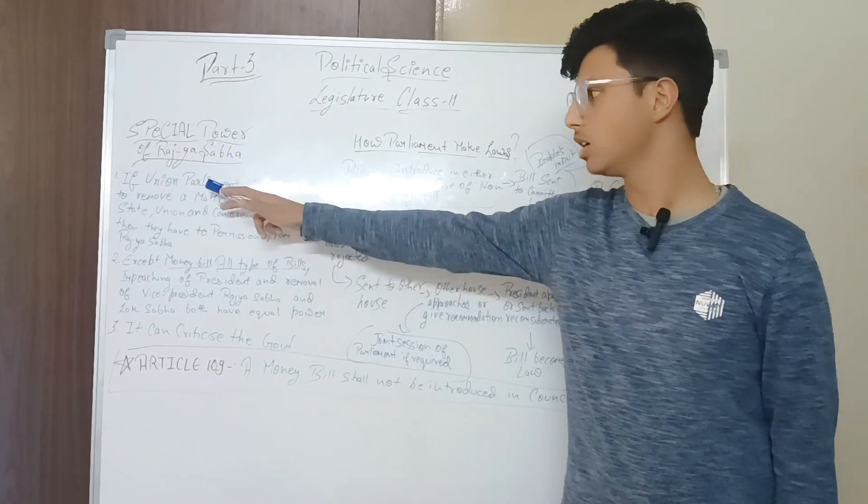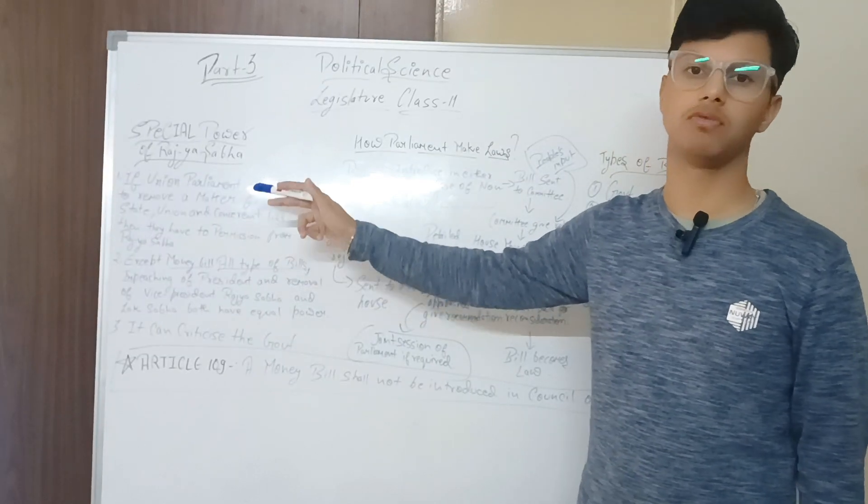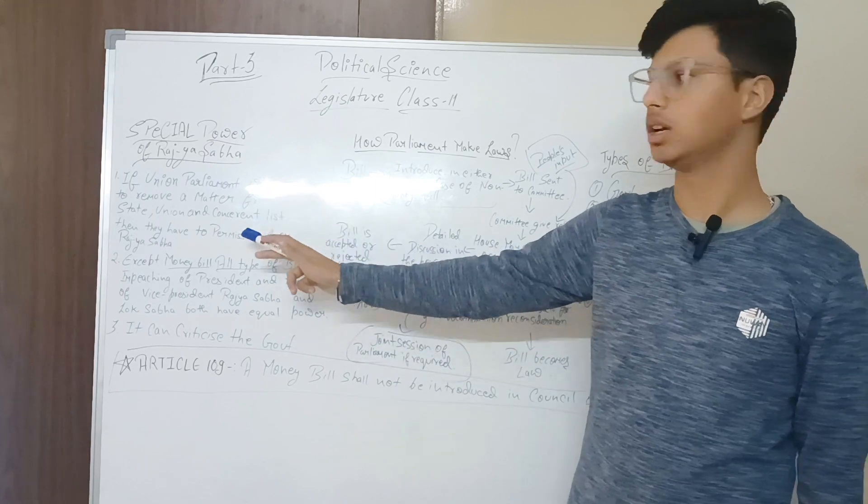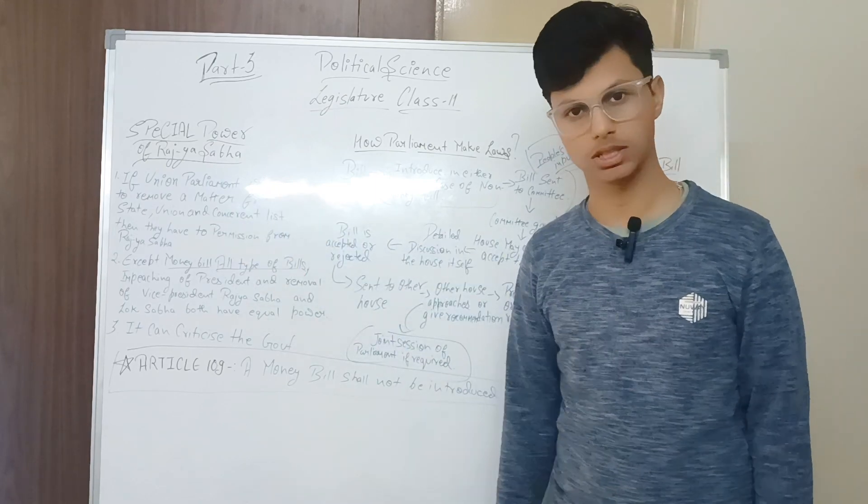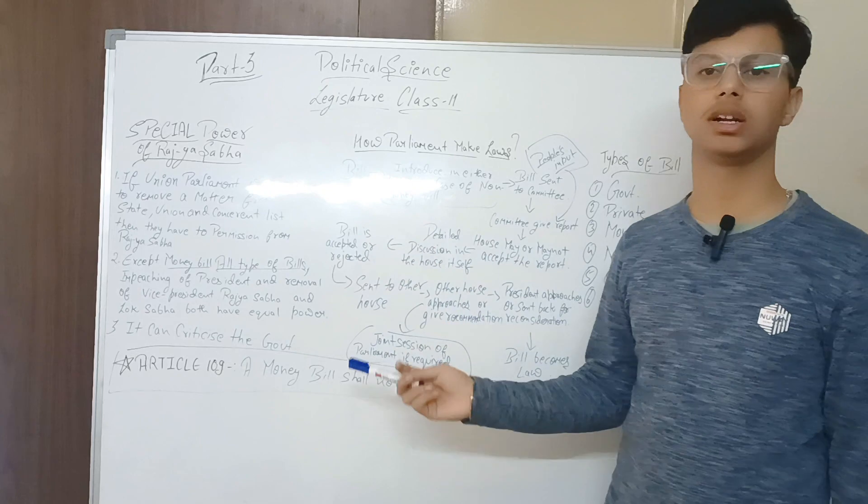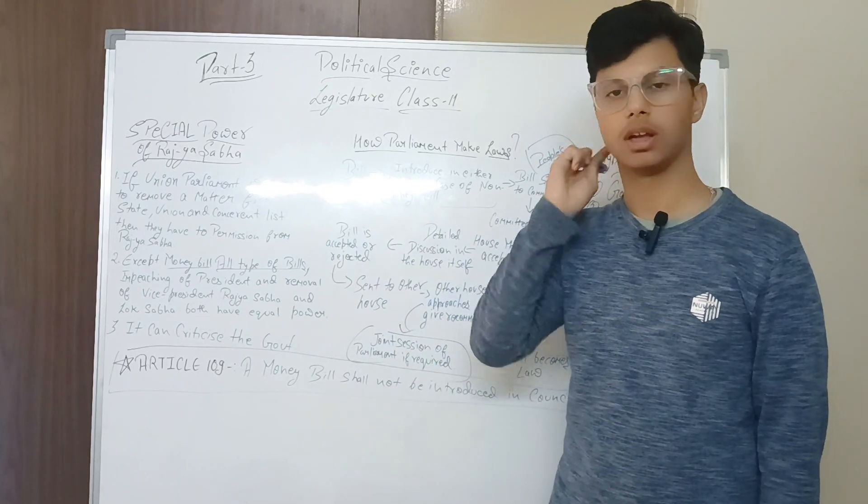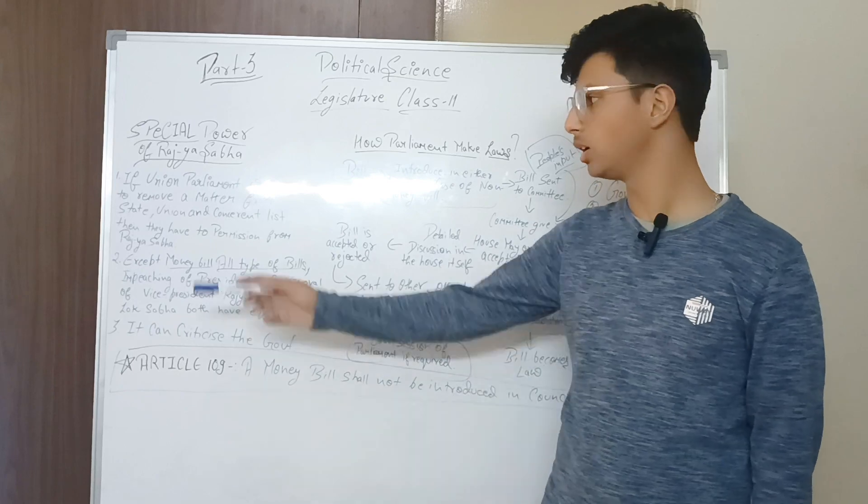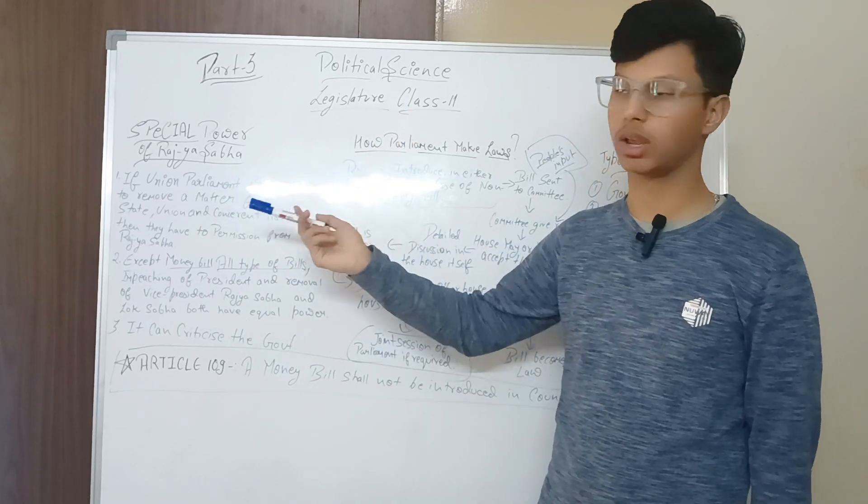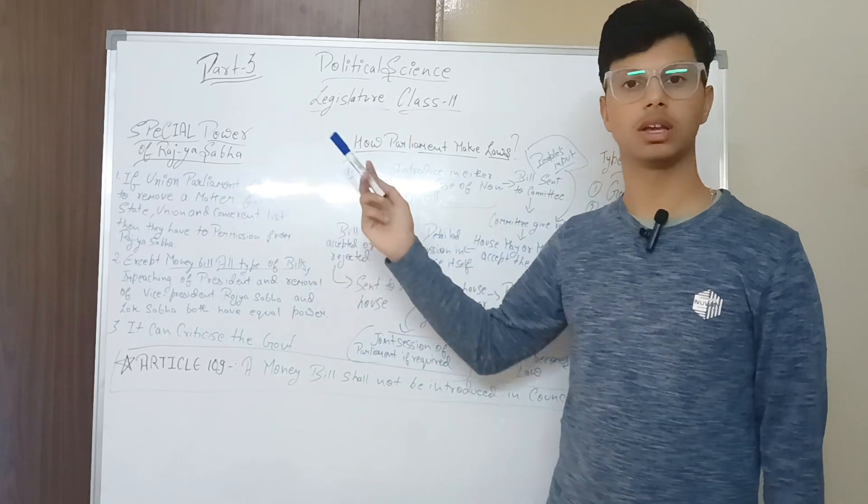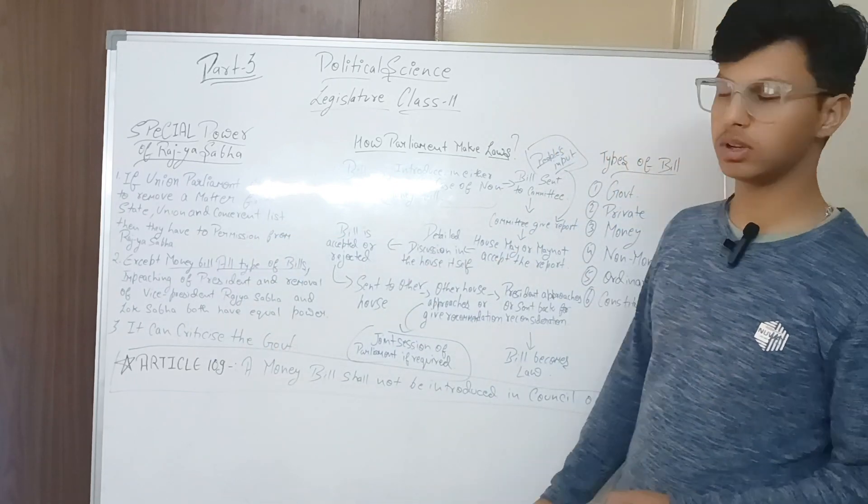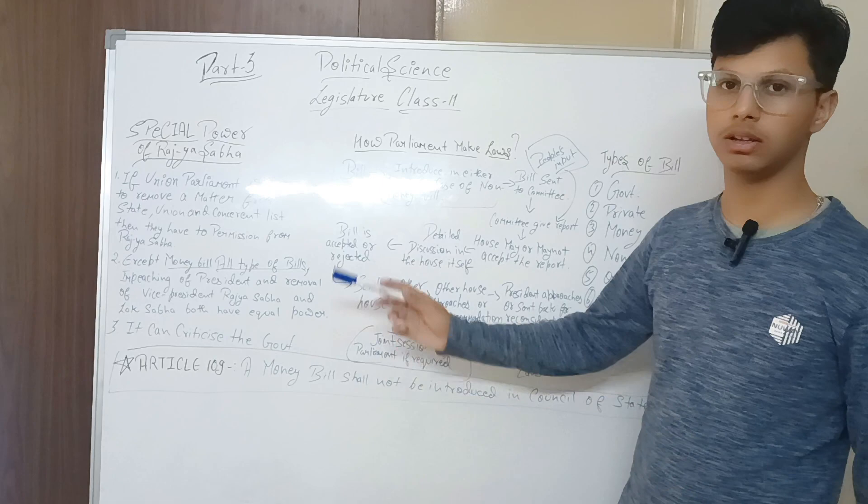Special powers of Rajya Sabha: If Union Parliament wishes to remove a matter from state list to union list or concurrent list, then they have to take permission from Rajya Sabha. We studied in class 10 that state has separate subjects, union has subjects like defense and currency, concurrent has subjects like marriage. To remove any of these, Rajya Sabha's permission is required.